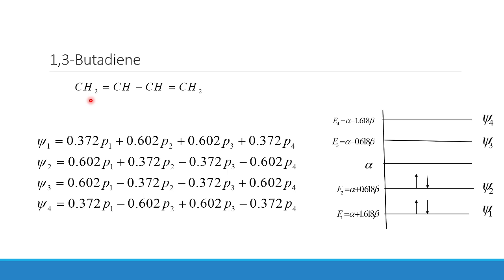In the 1,3-butadiene system there are four carbon atoms: the skeletal system is C=C–C=C, i.e., CH2=CH–CH=CH2. It has four pi electrons. The energy levels for the 1,3-butadiene system have already been calculated: E1 = α + 1.618β, E2 = α + 0.618β, E3 = α − 0.618β, and E4 = α − 1.618β.